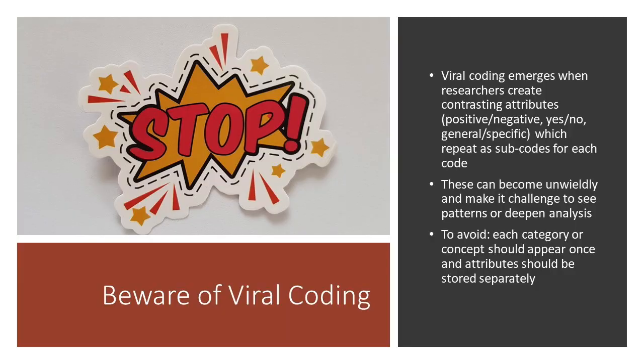As you develop your codes, beware of viral coding. New researchers are often tempted to create duplicative codes to compare attributes — for example, creating codes for different aspects of the project with yes-no or positive-negative as subcodes. This is problematic because as the subcodes keep repeating themselves, they create an unmanageable dataset which does not lend itself to seeing relationships or patterns for developing advanced analysis. To prevent a viral coding system, each category or concept should only appear once in the coding system, and attributes of the whole item, such as a role or location of a participant, should be kept separate from ideas emerging in the data.